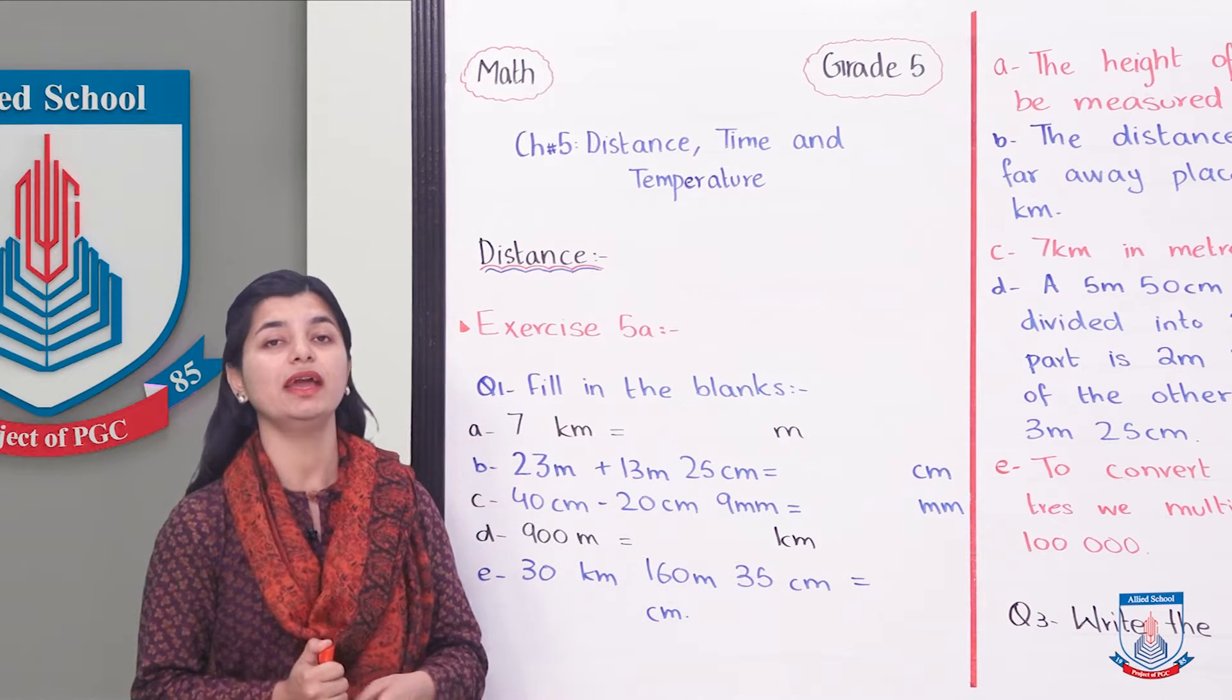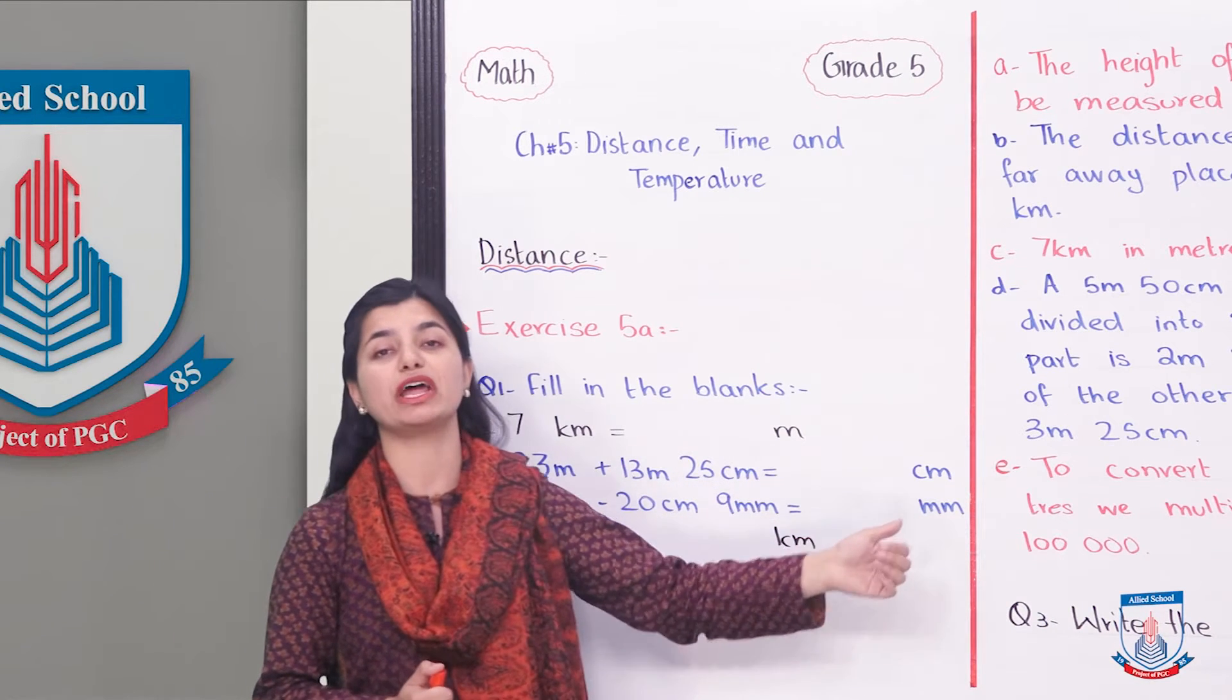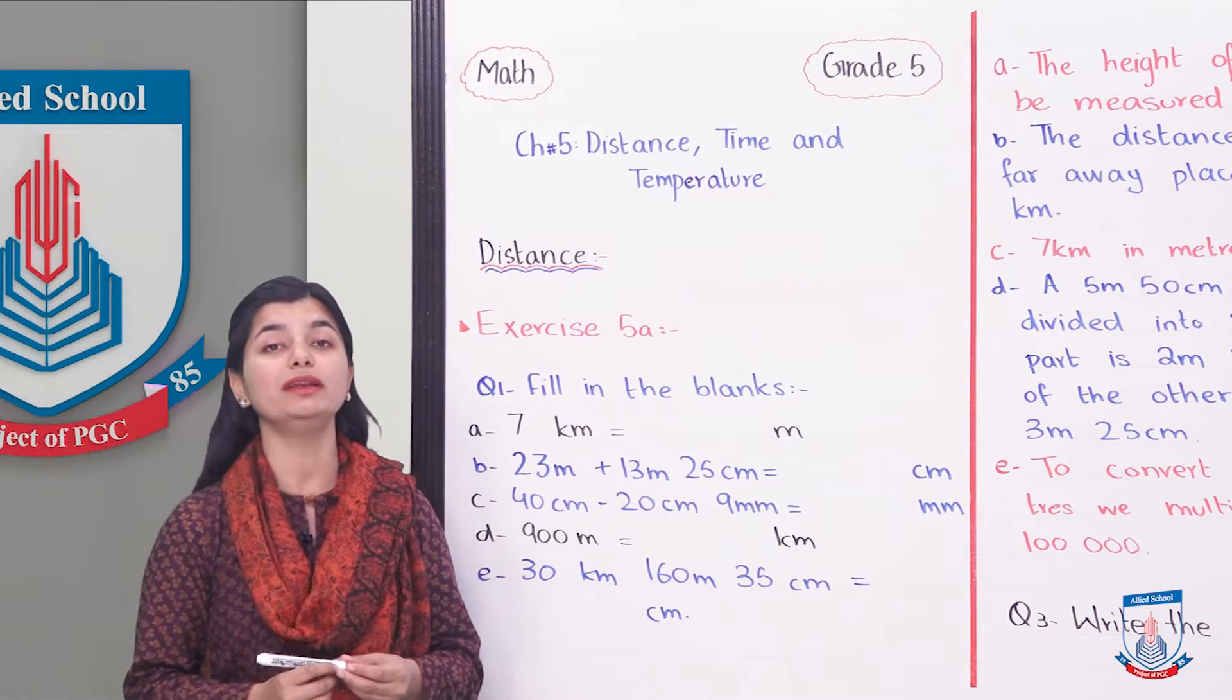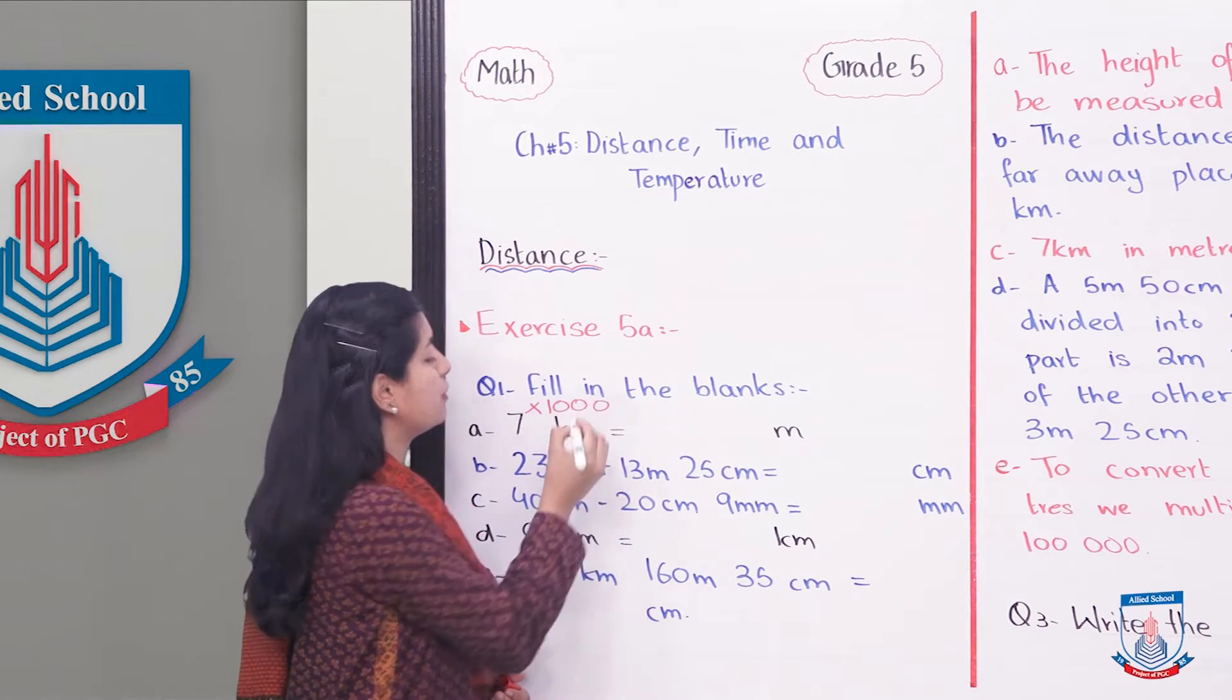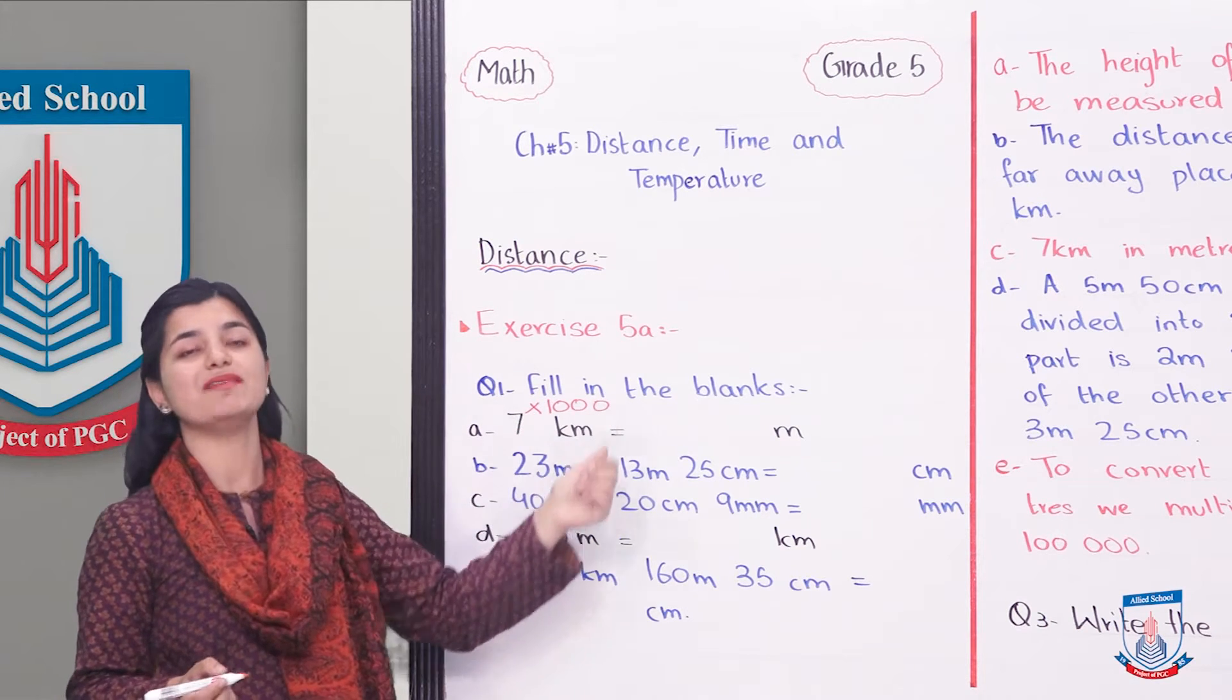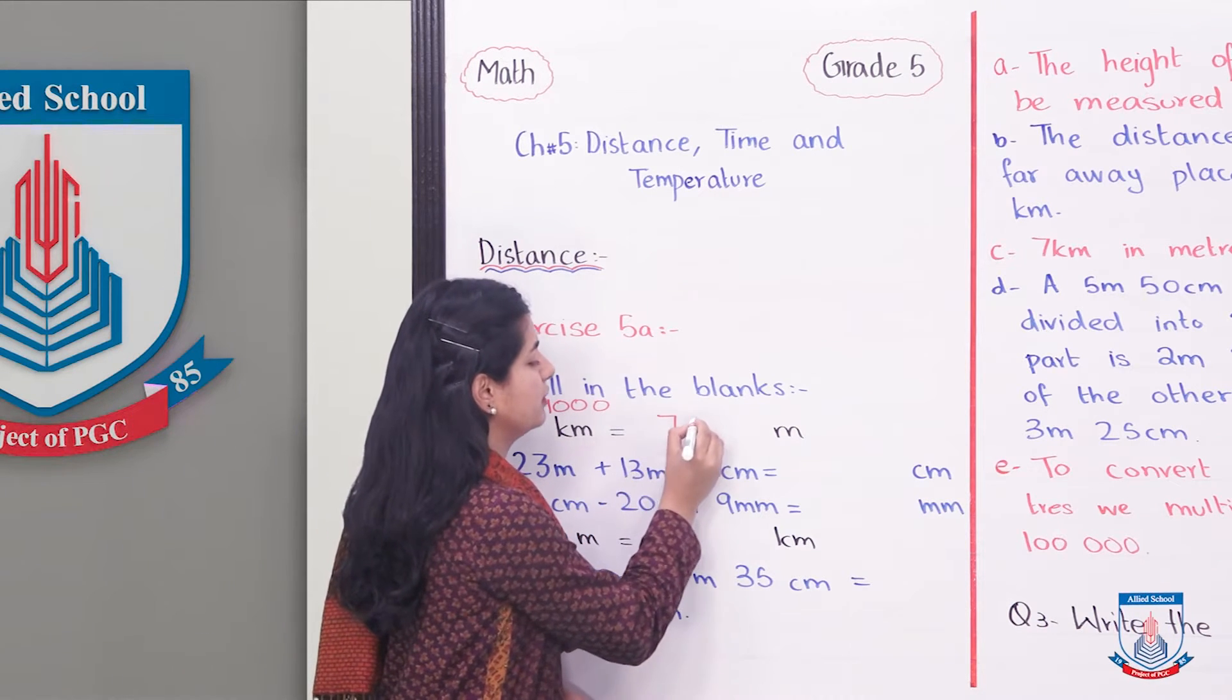You have a value in kilometers. So what will you do? You are going to multiply by 1000 because 1 km is 1000 meters. So 7 into 1000 is 7000. So your answer is 7000 meters.